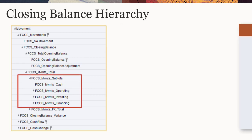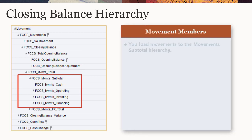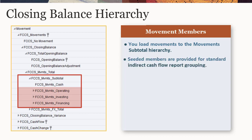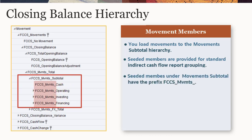You load periodic movements for your accounts to the base-level members of the Movement subtotal hierarchy. Seeded members are provided to organize your periodic movements into the standard groupings required for indirect cash flow reports, with the top-level parents being operating, investment, and financing. Seeded members have the prefix FCCS_MVMTS_.